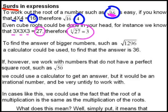But to find the answer of bigger numbers such as √1296, a calculator could be used to find the answer of 36. So in other words, 36 times 36 is equal to 1296.